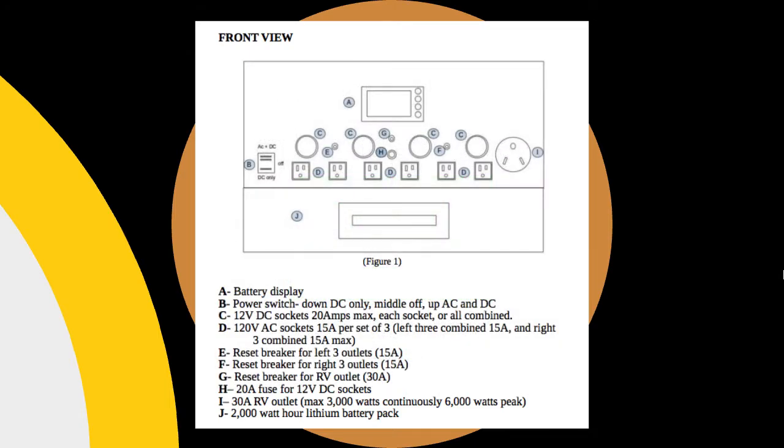Next, we have the AC ports. So we have six AC ports, which is awesome. You can power a ton of things with that. That's probably one of the most significant features of this, is six AC ports. But above that, you can see the four circles, the 12 volt DC sockets, 20 amps max for each one.